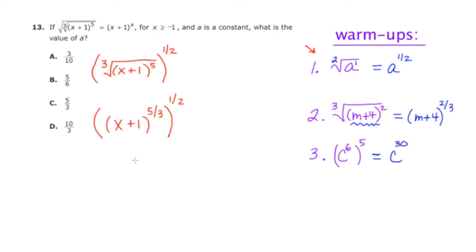And now if I use property number three, raising a power to a new power and you multiply, I can use that same technique here. So I can say x plus one, and if I multiply five-thirds times one-half, I end up getting five-sixths.